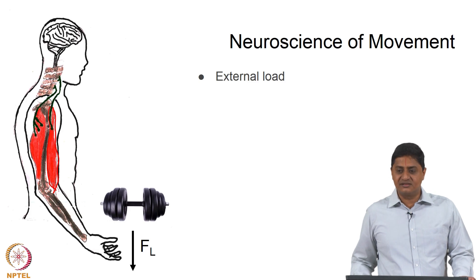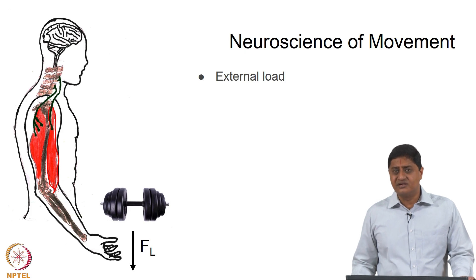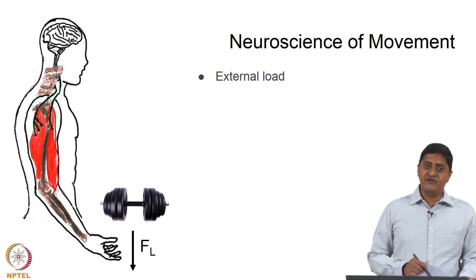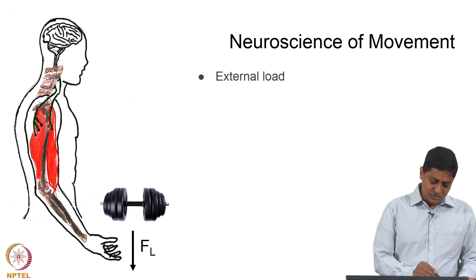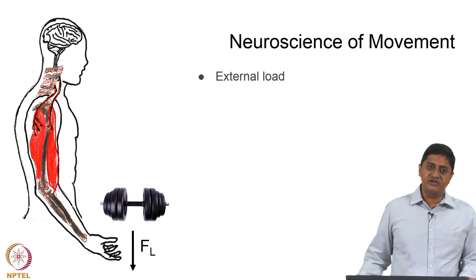Whenever there is a production of force, that means there is a force generator. How is this force generated? That is one question we will discuss as part of the course. This muscle is receiving inputs from neurons in the spinal cord — shown in black here. So the two muscles are receiving inputs from neurons in the spinal cord, and these neurons communicate with the muscles. The question is: how does the neuron communicate with the muscle?